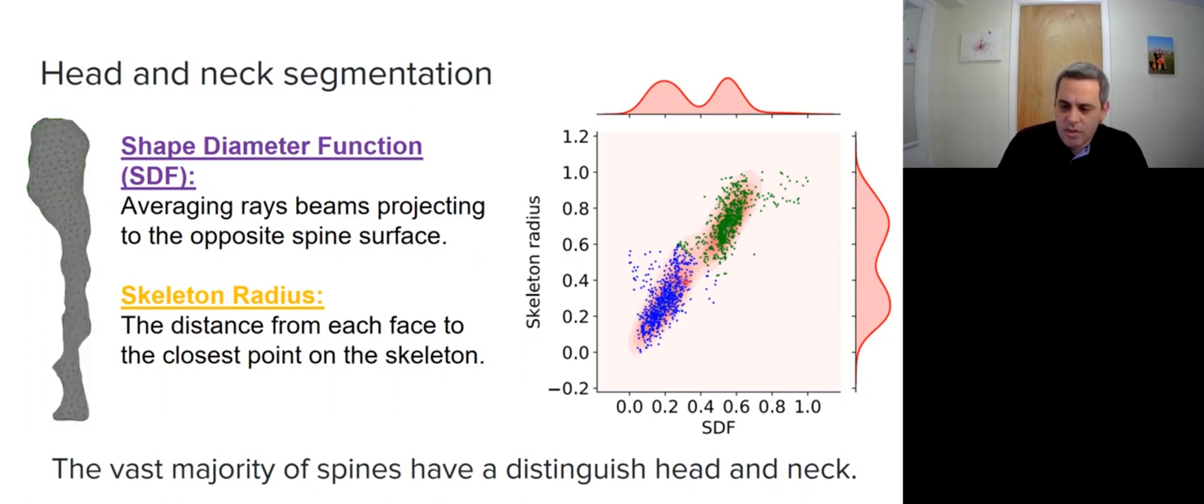This shows that the separation between head and neck is significant. We concluded that the vast majority of spines can be separated into head and neck.